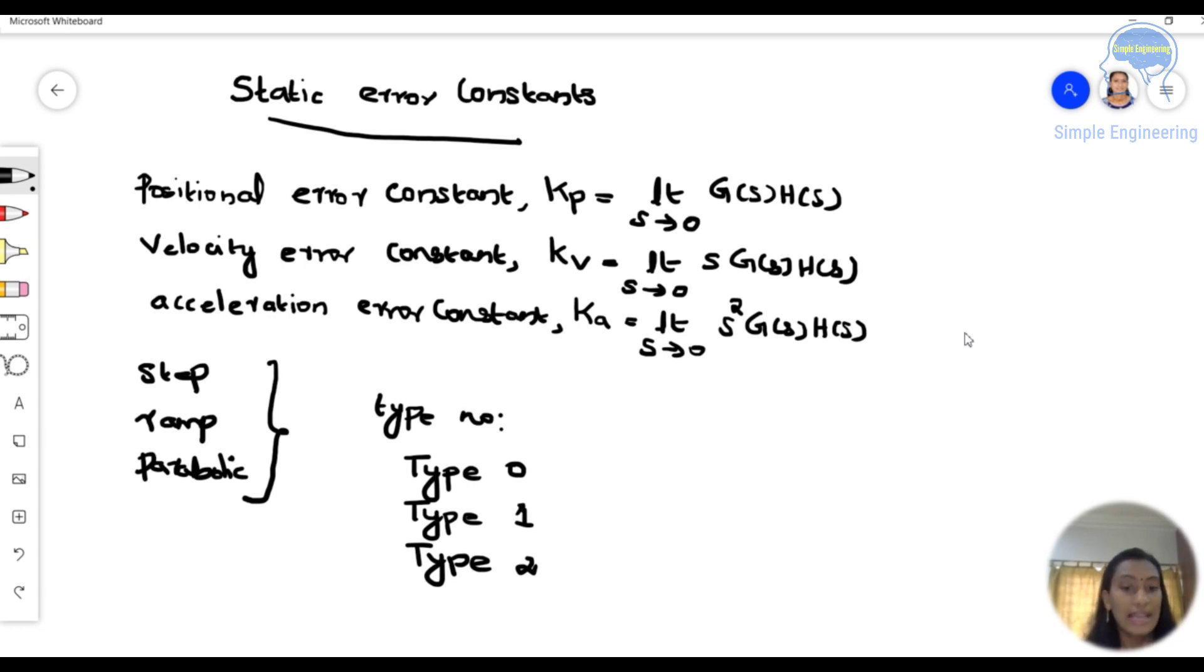So type 0 means we have a constant steady state error when the input is step signal. When our input is step signal and we are having a constant steady state error, that comes under type 0 category.